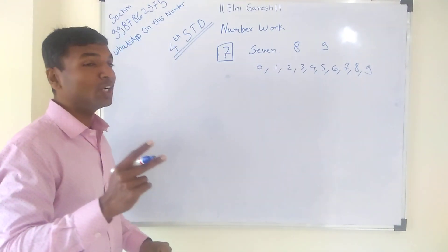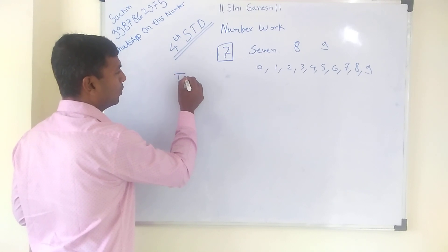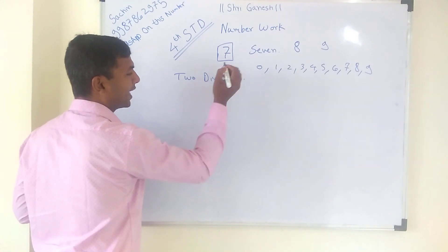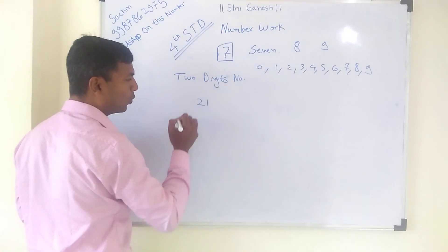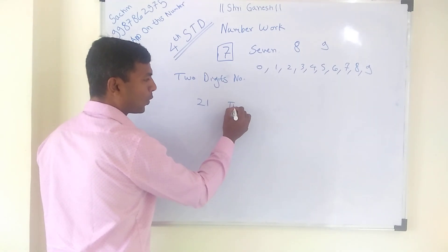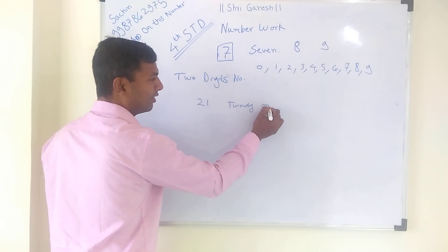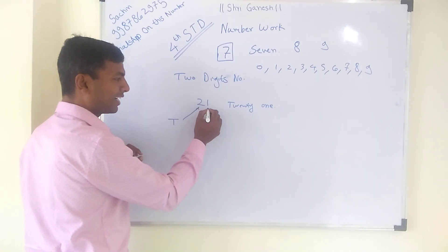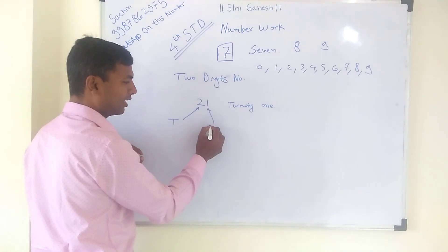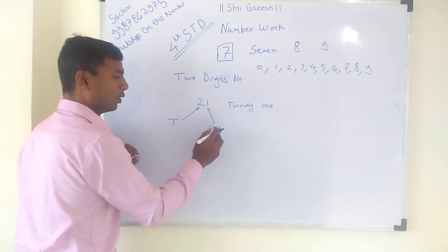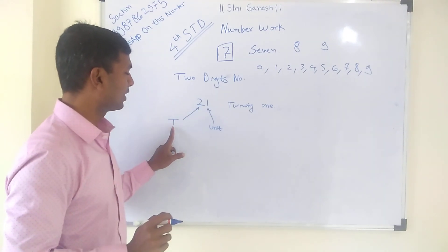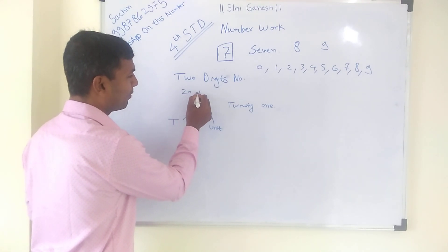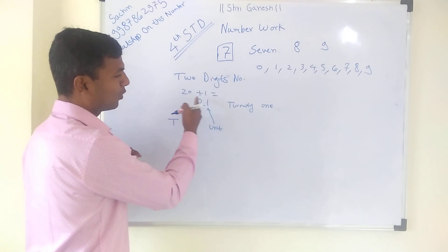Now we will see 2-digit numbers. I am writing 2, 1. So how to read out this? This is 21. In that, this digit is called the 10th place, and the 1 is called the unit place. So this is nothing but 20 plus 1. That's why we read it as 21.